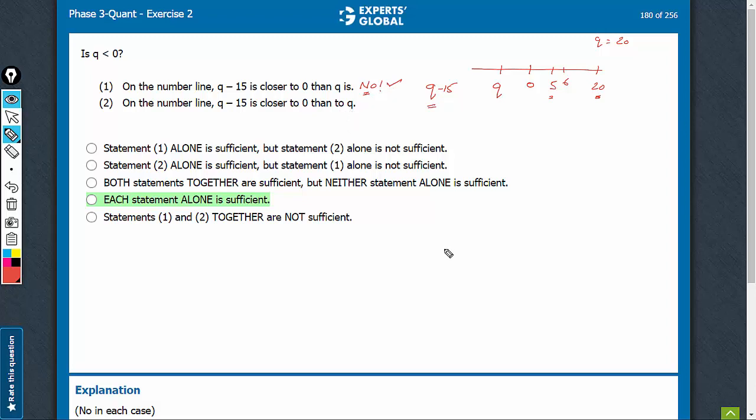Look at statement 2 now. q minus 15 is closer to 0 than to q. So imagine, if q were negative, q minus 15 would be even more negative, and it says q minus 15 is closer to 0, which is never going to happen because for negative values of q, q would lie between q minus 15 and 0, and therefore this condition would never be met for negative values of q.